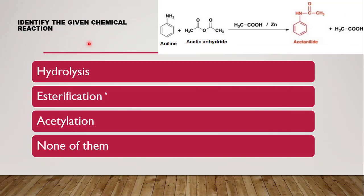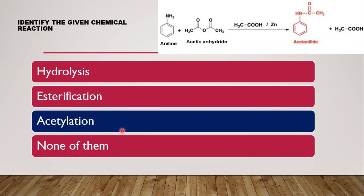Next question: identify the given chemical reaction. The reaction shown is aniline being converted to acetanilide in the presence of acetic anhydride and acetic acid with zinc dust. This is an aniline-to-acetanilide conversion. The reaction wherein the active hydrogen is replaced by an acetyl group is acetylation, since the acetyl group is being substituted. Whether it is hydrolysis, esterification, acetylation, or none of them — the correct answer is acetylation.